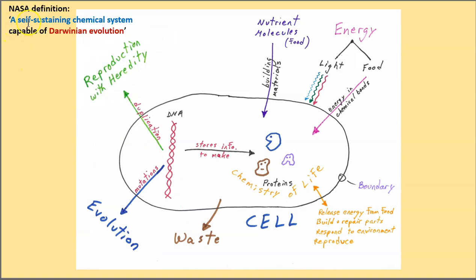So if we think about NASA's definition, a self-sustaining chemical system capable of Darwinian evolution, that's what we have here. A self-sustaining chemical system. Self-sustaining because the chemistry of life in here is continually maintained by getting resources and energy from the environment and getting rid of waste. And Darwinian evolution requires that organisms, living things, can reproduce and change over time. And that is possible because of this important molecule of DNA.